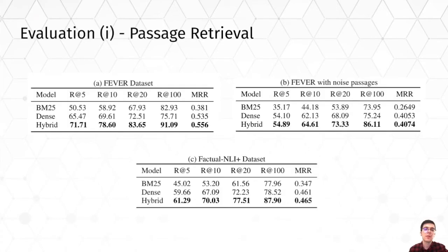In these tables, we see the recall and mean reciprocal rank of the passage retrieval models on the FEVER and FACTCHECK-NLI+ datasets. We also compare performance on a noisy extension of the FEVER dataset where additional passages from Bing search engine are included as noise. We see that when noise passages are added, the gap between the hybrid passage retrieval model in QINPlus and sparse retrieval widens, demonstrating the importance of dense retrieval for surfacing relevant passages from a noisy corpus. Overall, the hybrid retrieval in QINPlus — combining sparse and dense retrieval — achieves the best performance.